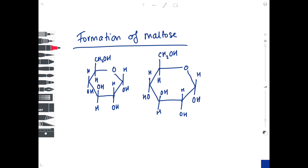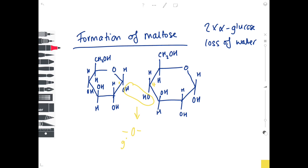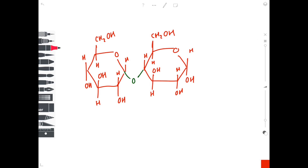I'm going to show you how maltose is formed. Remember, maltose is a disaccharide formed from two alpha-glucose monomers joining together by a condensation reaction, which means loss of water. The loss of water takes place between the first carbon on one molecule and the fourth carbon on its neighbouring molecule — so the water molecule is lost between them. You lose H2O, and it forms an oxygen-glycosidic bond, producing the disaccharide maltose, showing the glycosidic bond joining those alpha-glucose residues together.